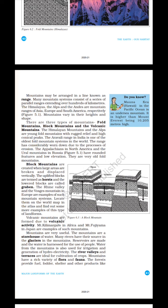Block mountains are created when large areas are broken and displaced vertically. The uplifted blocks are termed as Horst and the lower blocks are called Graben. The Rhine Valley and the Vosges mountain in Europe are examples of such mountain systems. Locate them on the world map in the Atlas and find out some more examples of this type of landform.